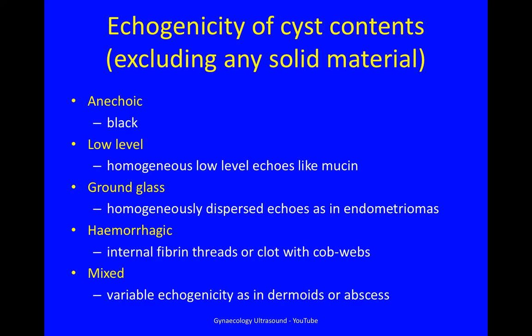Ground-glass echogenicity is where the echoes are dispersed, like in an endometrioma. Hemorrhagic is where there are internal fibrin threads or a clot with cobwebs. Or mixed, where the echogenicity is variable, like in a dermoid or abscess.